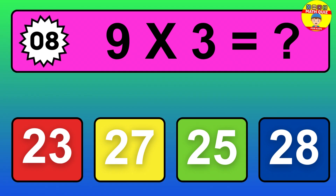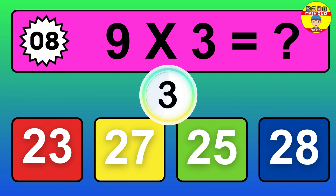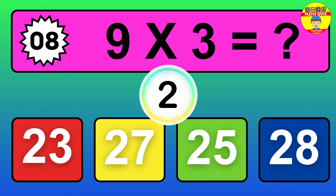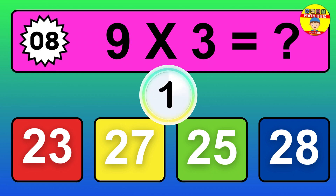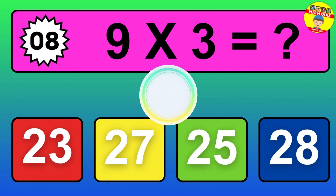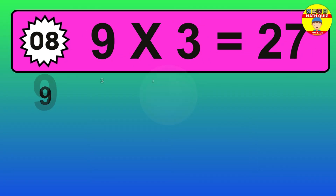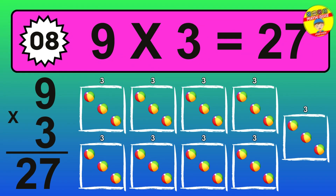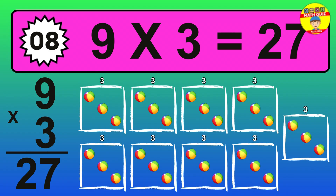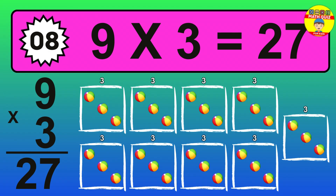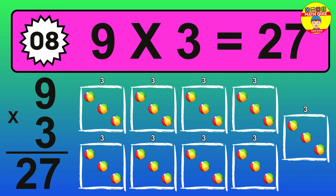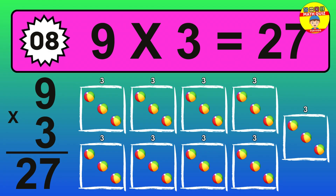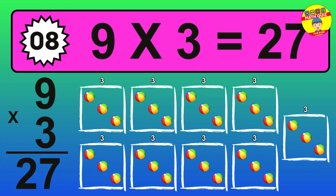Question 8. 9 times 3 equals what? The answer is 9 times 3 is 27. To calculate, we have 9 groups with 3 balls each one. So, how many balls do we have? 27 balls.